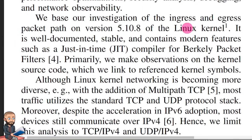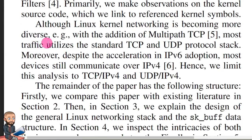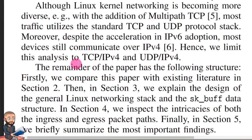We base our investigation of the ingress and egress packet path on version 5.10.8 of the Linux kernel, which is well documented, stable, and contains modern features such as a just-in-time compiler for Berkeley Packet Filters — you might recognize it as BPF. Primarily, we make observations on the kernel source code which we link to referenced kernel symbols. Although Linux kernel networking is becoming more diverse, for example with the addition of multipath TCP, most traffic utilizes the standard TCP and UDP protocol stack. Moreover, despite the acceleration of IPv6 adoption, most devices still communicate over IPv4. Hence, we limit this analysis to TCP-IPv4 and UDP-IPv4.